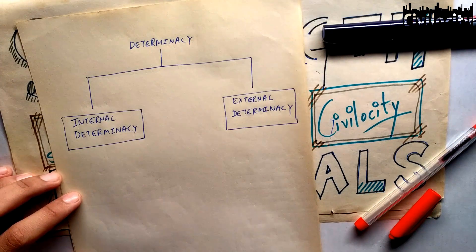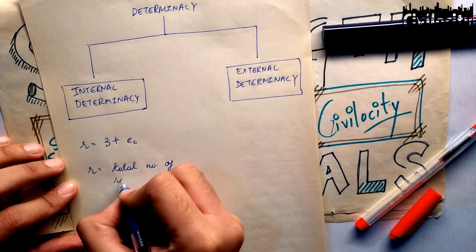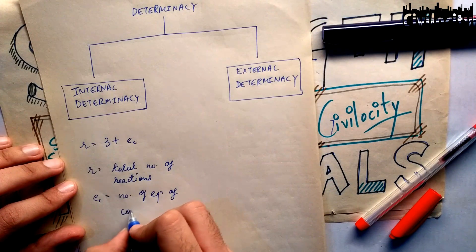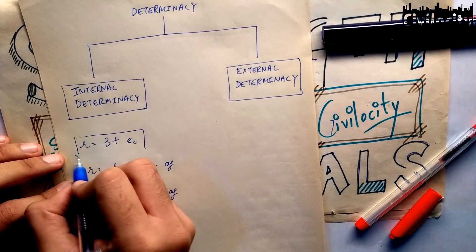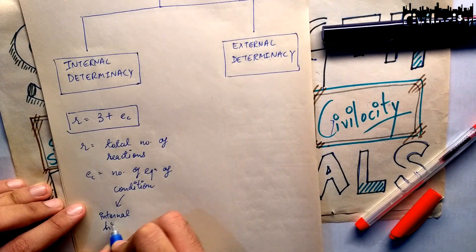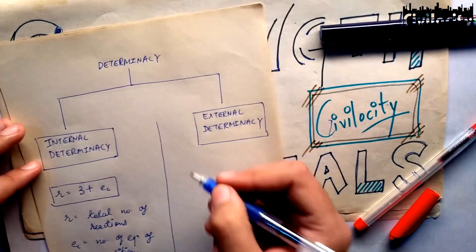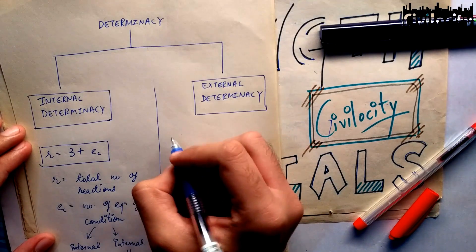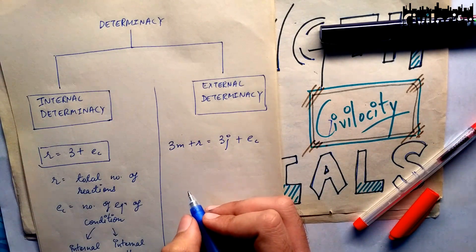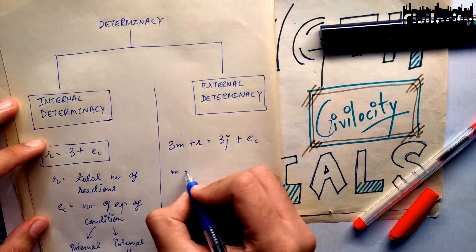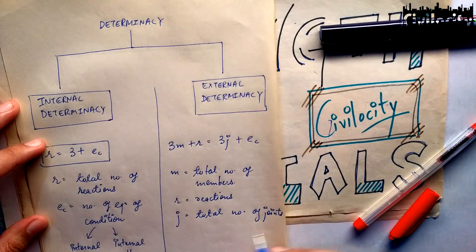To find out if a beam is externally determinate or indeterminate, we use the equation: R = 3 + EC, where R is the total number of reactions at the supports, 3 is the number of equilibrium equations, and EC is the equation of condition. For internal determination, we use: 3M + R = 3J + EC, where M is the total number of members, R is the total number of reactions, J is the total number of joints, and EC is the number of equations of condition.